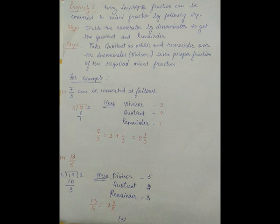Property two: every improper fraction can be converted to a mixed fraction. Step one: divide the numerator by the denominator to get the quotient and the remainder. Step two: take the quotient as the whole number and remainder over the denominator as the proper fraction. For example, seven by three — dividing seven by three gives quotient two and remainder one. So seven by three can be represented as two plus one by three, which means two and one by three.